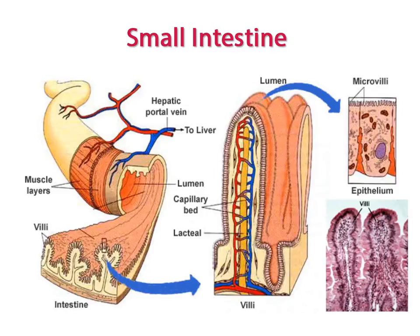The small intestine has a large surface area and is highly vascularized, both of which assist in the rate of absorption of nutrients across the intestinal wall. The small intestine also has glands that secrete digestive enzymes and a muscular wall to help move food through the digestive tract.